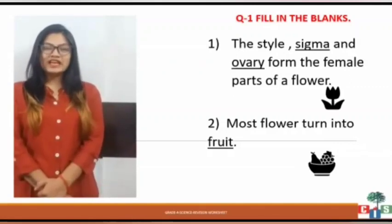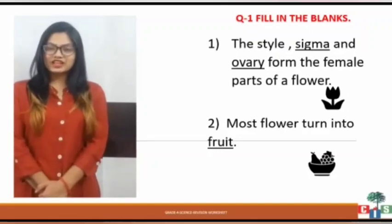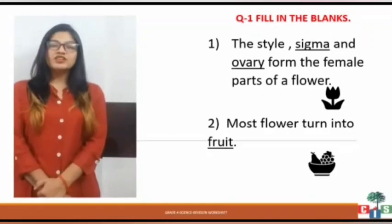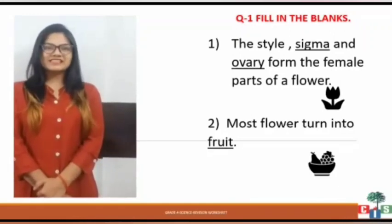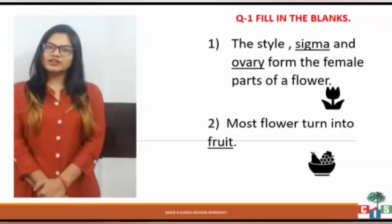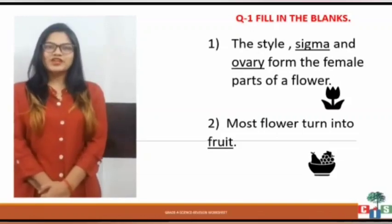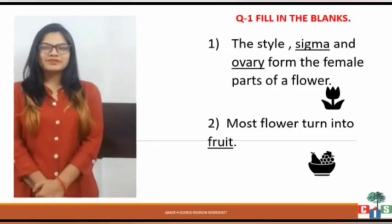The first fill in the blank is: the style, dash, and dash form the female part of the flower. There are three organs which consist of the female part of the flower. One name given is style. The other two names are stigma and ovary. So in the given dashes, we write stigma and ovary. The next blank is: most flowers turn into dash. Most flowers will turn into fruit. So in the dash, we write fruit.